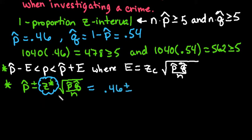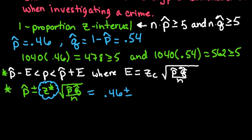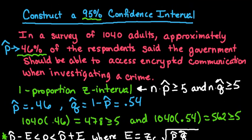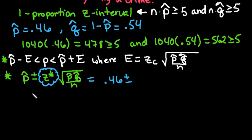The z star comes from our critical value, so because of the fact that we're looking for a 95% confidence interval, we're going to use technology to help us find this. In my calculator, what I'm going to do is inverse norm, half of 1 minus the level of confidence, and then the mean and the standard deviation are just going to be 0 and 1.